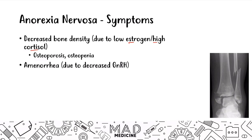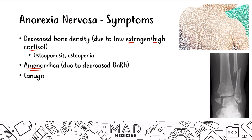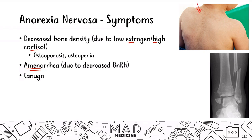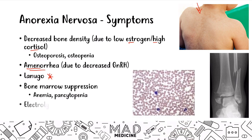Another thing that can happen is amenorrhea, especially in a female — that is a very hallmark presentation for anorexia, due to decreased GnRH not being produced. Patients will also present with lanugo, which are fine hairs normally seen on a baby. In adults, those fine, brittle, soft hairs are not normally present, so that is a key giveaway. Because of restricting diet, there will also be bone marrow suppression leading to anemia and pancytopenia. Finally, electrolyte disorders will occur, leading to bradycardia and hypotension.